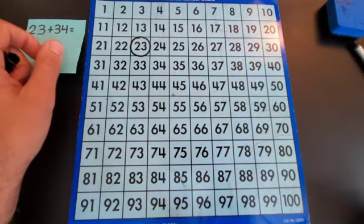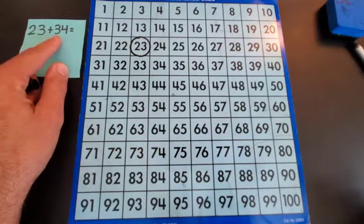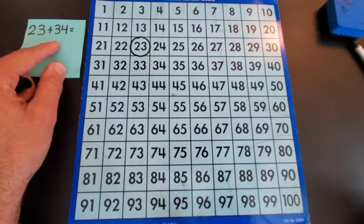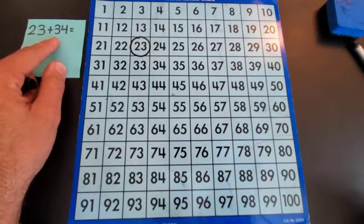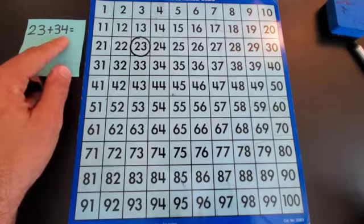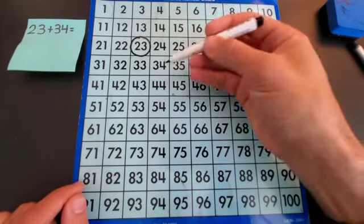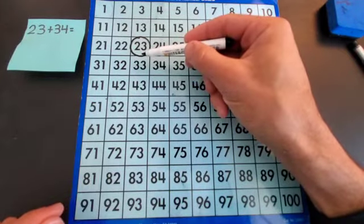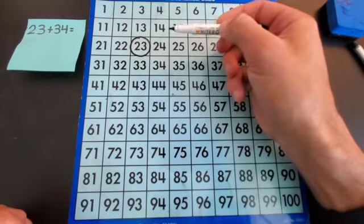Now using my place value knowledge, I'm going to take the tens and ones from 34 and use them to help me move to a higher number. 34 has three tens and four ones. When you're on a hundreds chart, as you can see, as you go down 30, 40, 50, the numbers get higher.